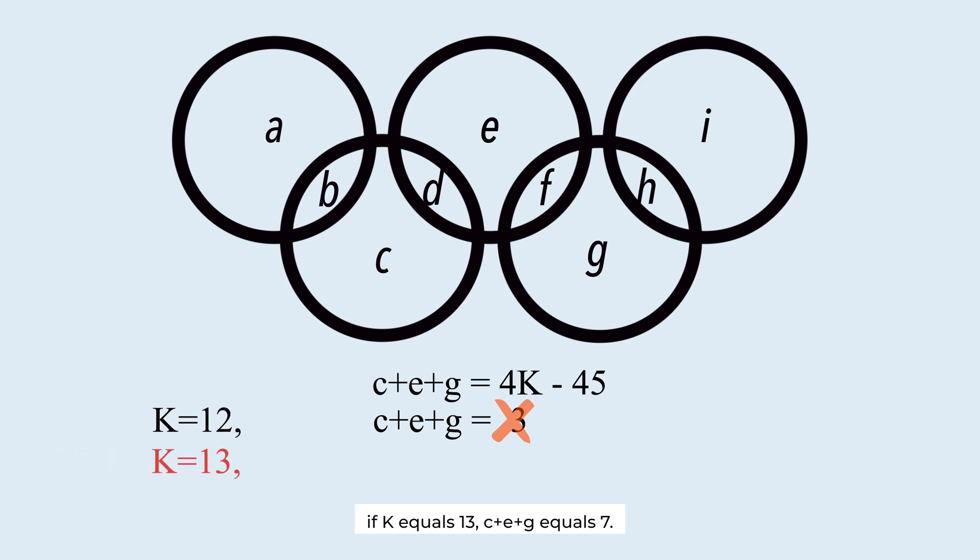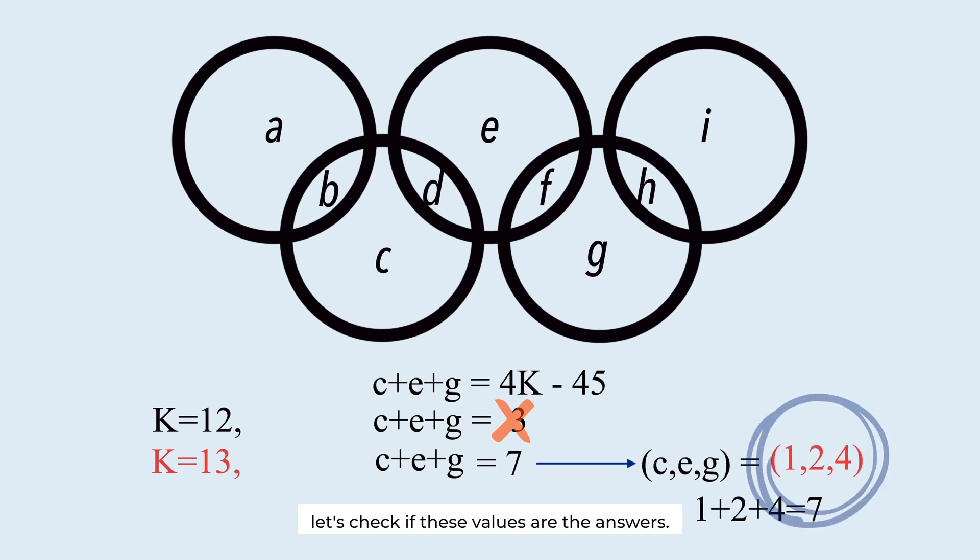If K equals 13, C plus E plus G equals 7. The possible values for C, E, and G could be 1, 2, and 4. Let's check if these values are the answers.